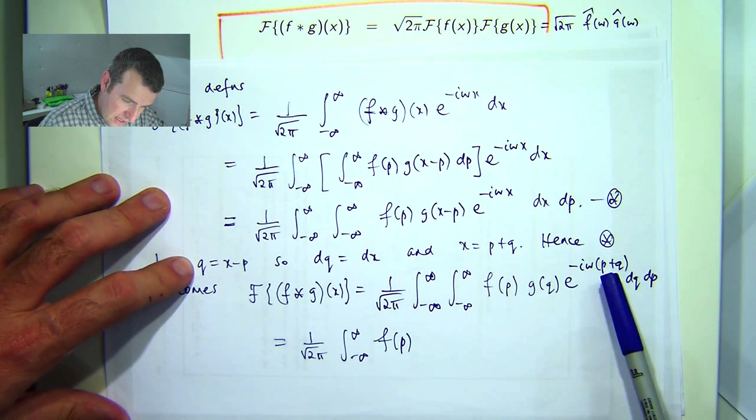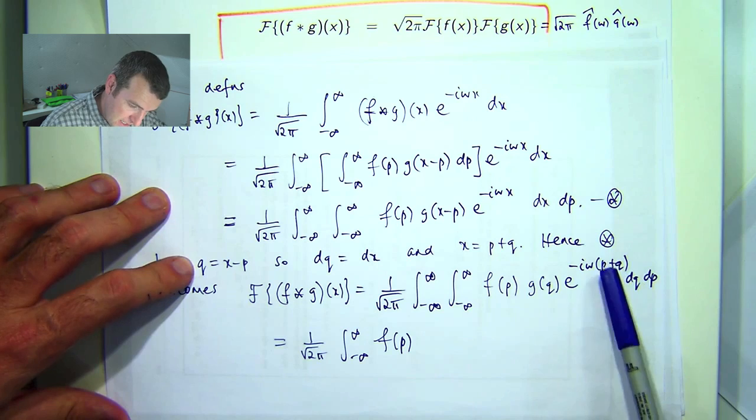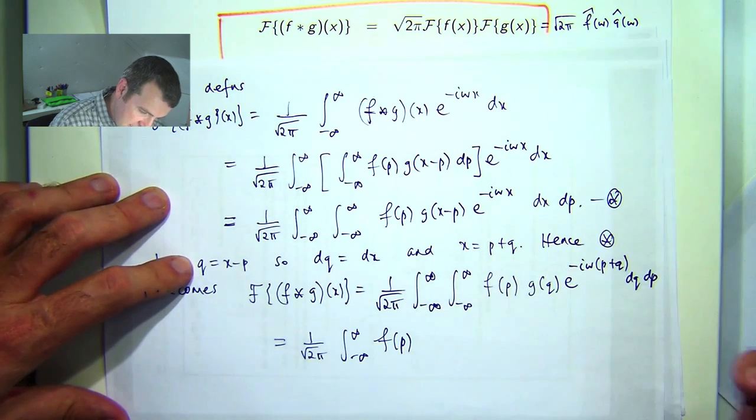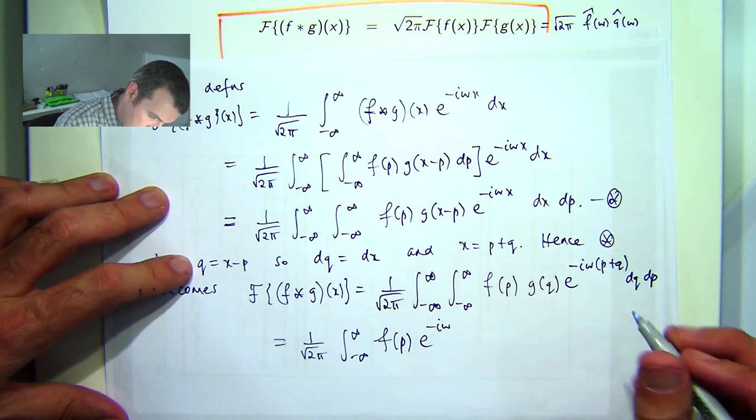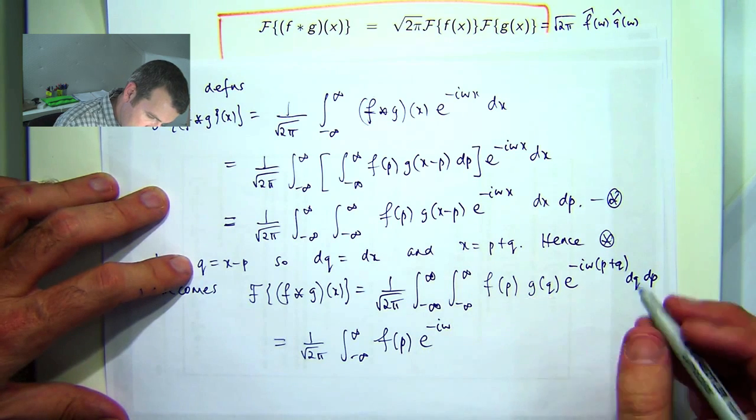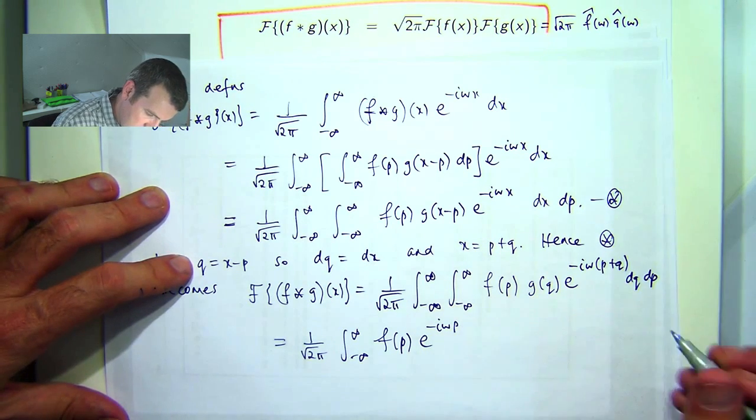Okay, I can bring the e to the negative i w p out, because again that has nothing to do with q.